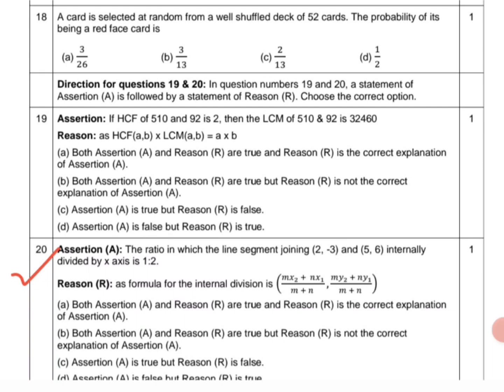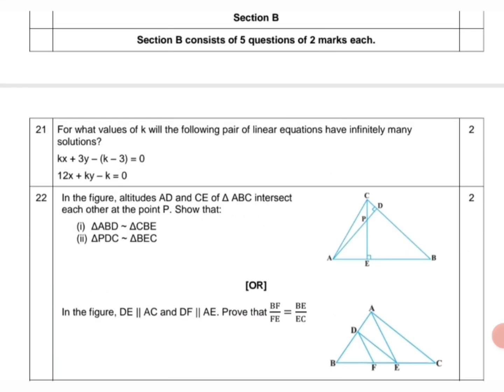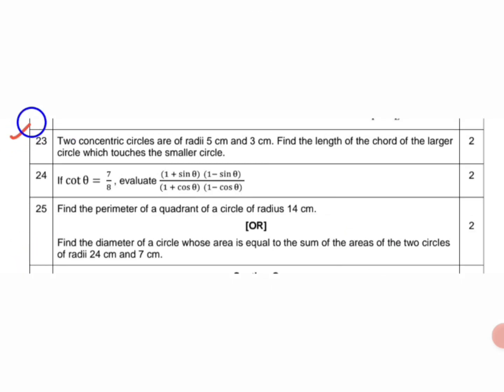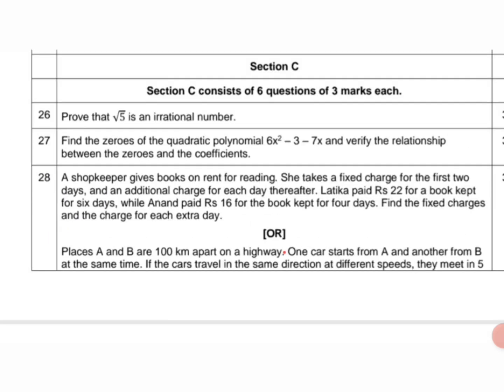Section B consists of five questions of two marks. This is question 21, question 22, question 23, question 24, and question 25. Section C consists of six questions of three marks.